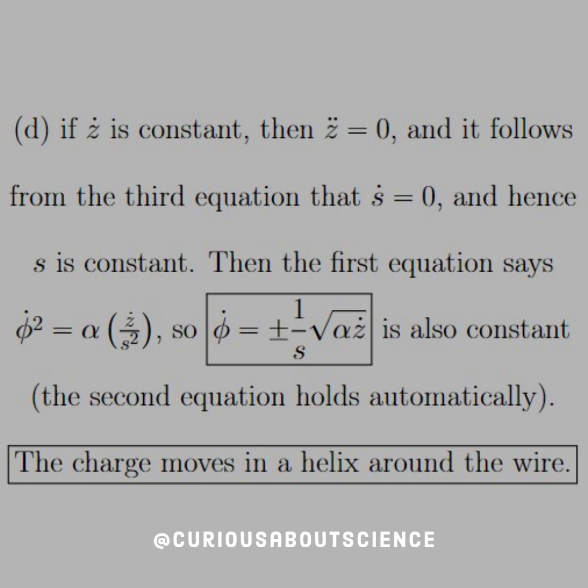But clearly, this is also a constant since z dot is a constant. So the second equation holds that we have the double dots equal to zero. Good to go there. And so what this tells us is that the charge moves in a helix around the wire.